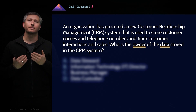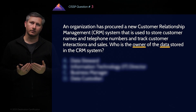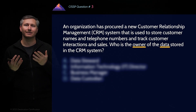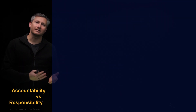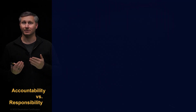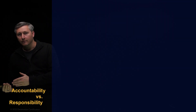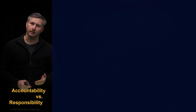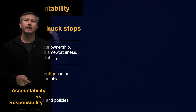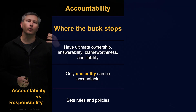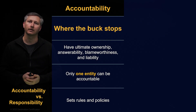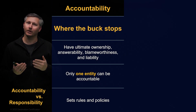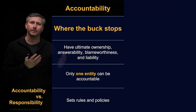Before we look at the answers, let's think about what the perfect answer would be — what the data owner would be for this question. To think about this, it's important to consider two terms: accountability versus responsibility. Accountability means the person who has ultimate ownership, answerability, blameworthiness, and liability. Those are the keywords we're looking for: owner or ownership.